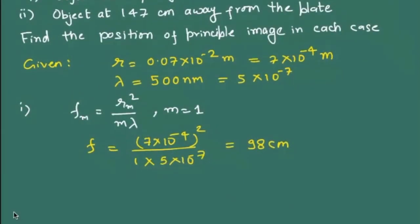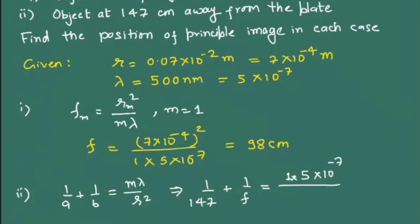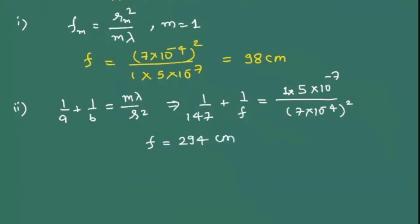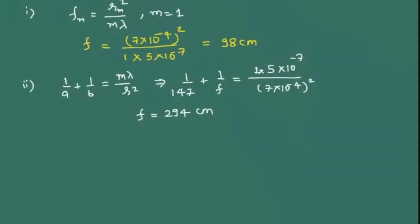For the next one, we are given a as well, so we'll have 1/a + 1/b equals again my m is 1 here, mλ/r² so that will give us a to be 147. b is what we need to calculate, so I can write that in the form of f. m is 1, it is again 5×10⁻⁷ divided by r which is 7×10⁻⁴ whole squared. I can write it as 294 centimeters.